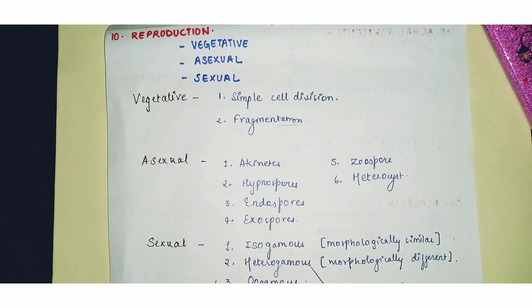If the gametes are morphologically different — meaning we can tell which is male and which is female — they are called heterogamous. Here the male is the smaller one and the female is always bigger in size. Oogamous reproduction is a more advanced mode: the female gamete is enclosed within the oogonium and is totally non-motile, while the male gamete is small — flagellated or not — and swims or is carried by water current to reach the oogonium, where fertilization takes place.